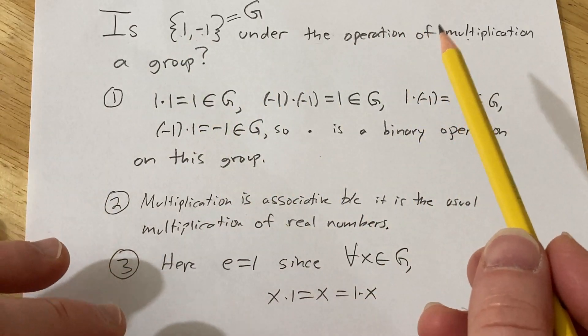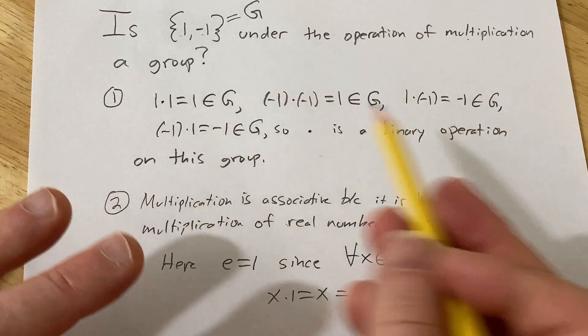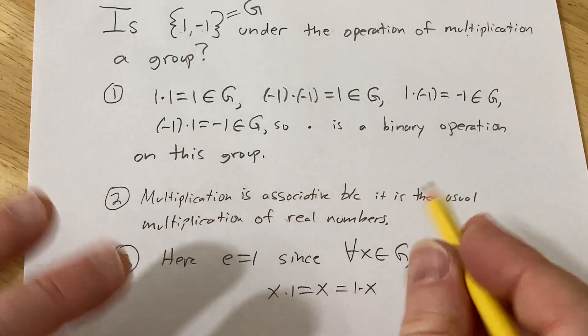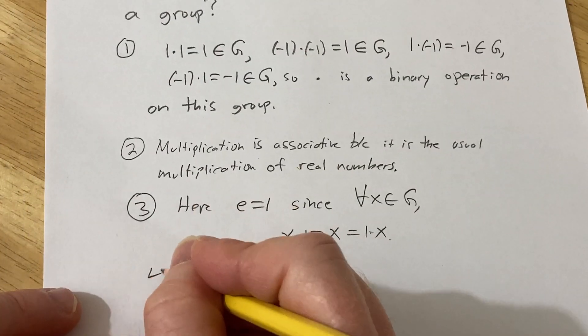negative 1 times 1 is negative 1, and you know, you can, it's commutative, so everything is good. There's no issues here, very, very clear. Four,